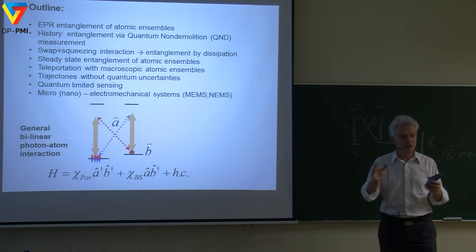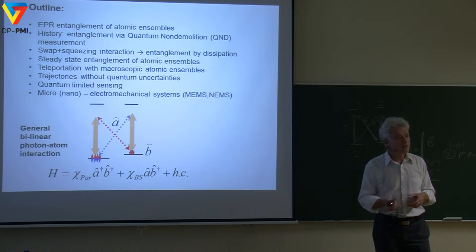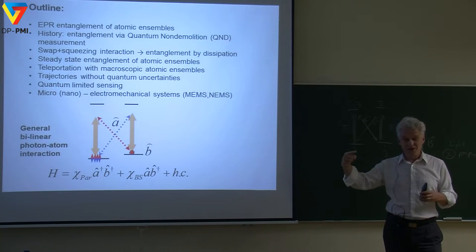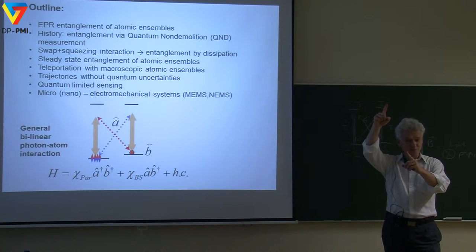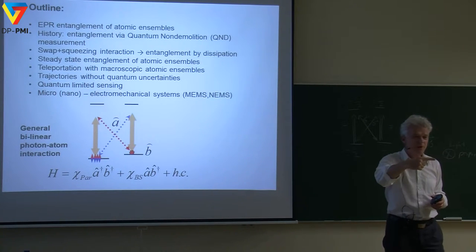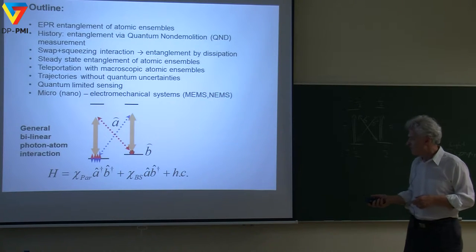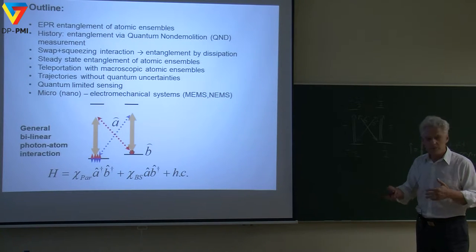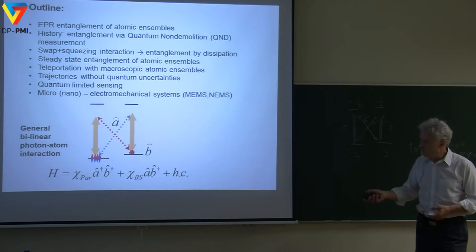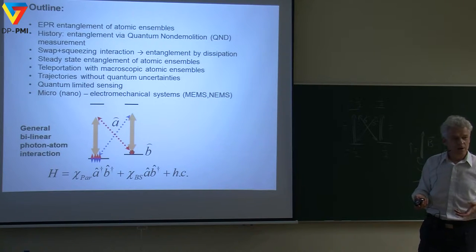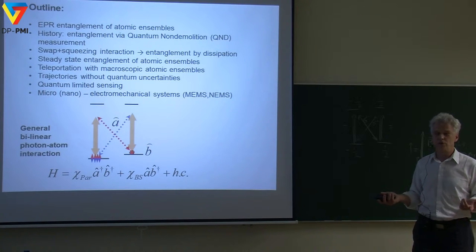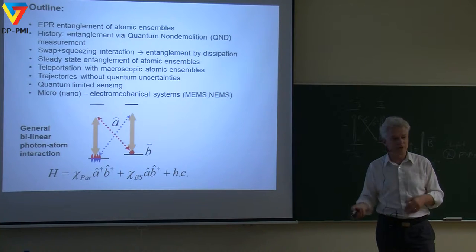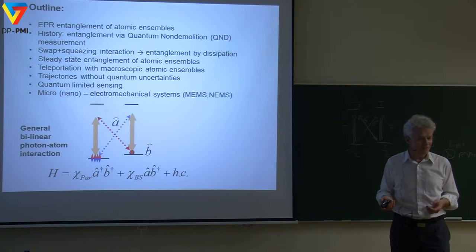In quantum information science this is often referred to as a beam-splitter Hamiltonian. You have one input mode, another input mode, and two output modes — this Hamiltonian tells you that you can come with one mode and the two modes will be swapped. This looks like the most general form of a bilinear Hamiltonian for the interaction between two systems. With this Hamiltonian at hand, you can play all the endless games of entanglement, teleportation, and quantum measurement — and this is what we've been doing for the past 15 years.